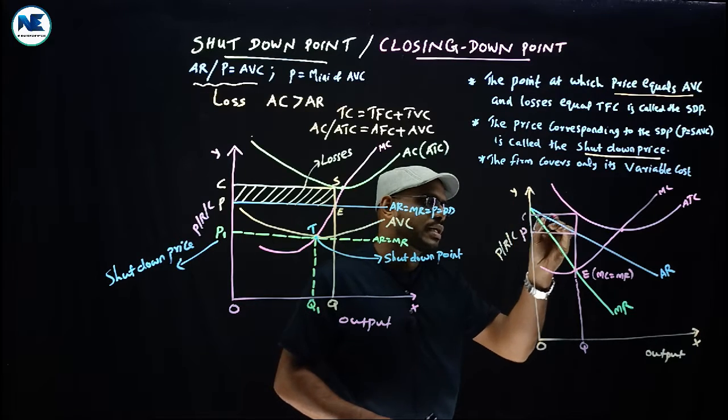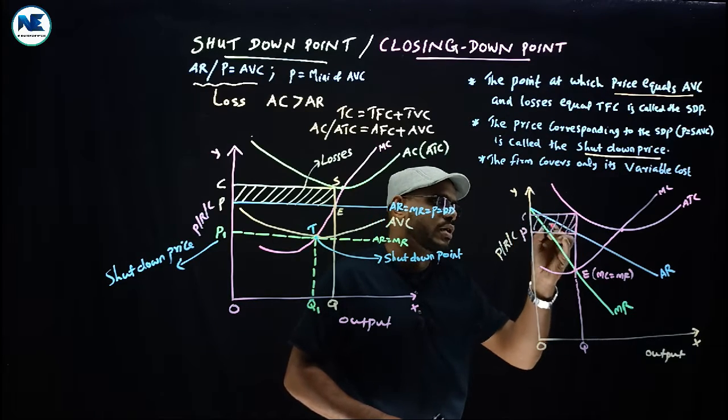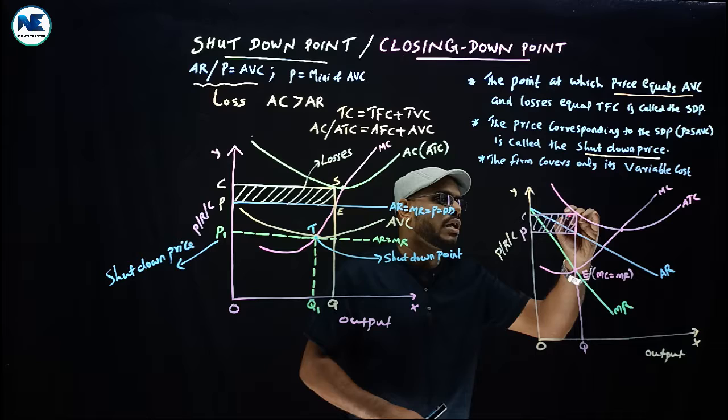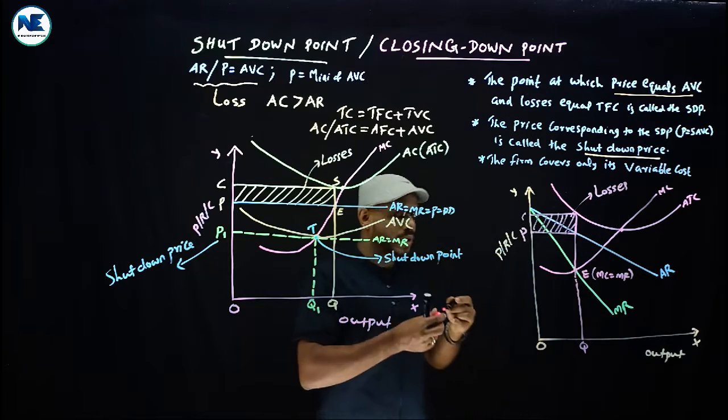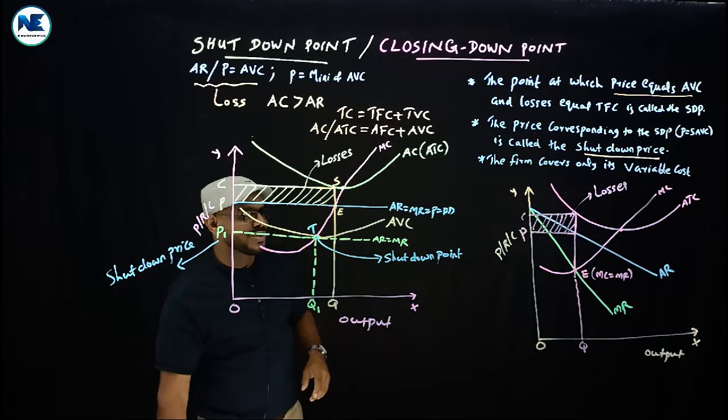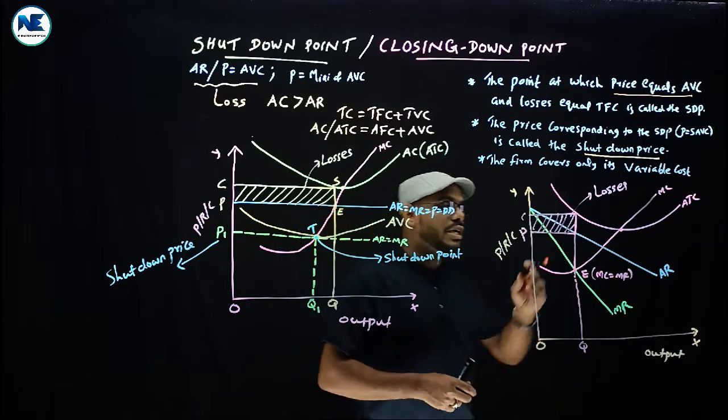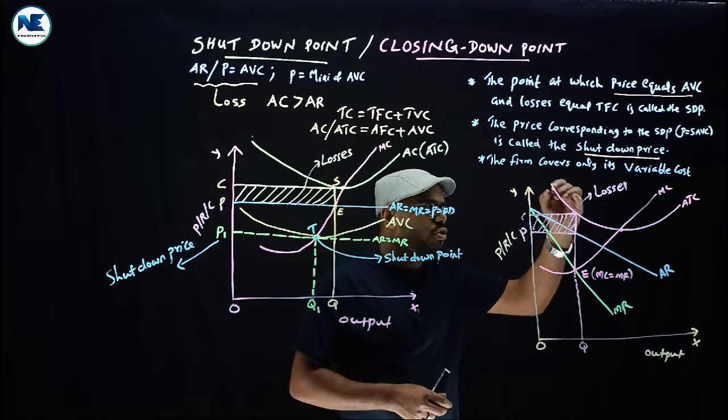This represents losses or subnormal profit. Now let's discuss the shutdown point. The shutdown point relates to average variable cost.